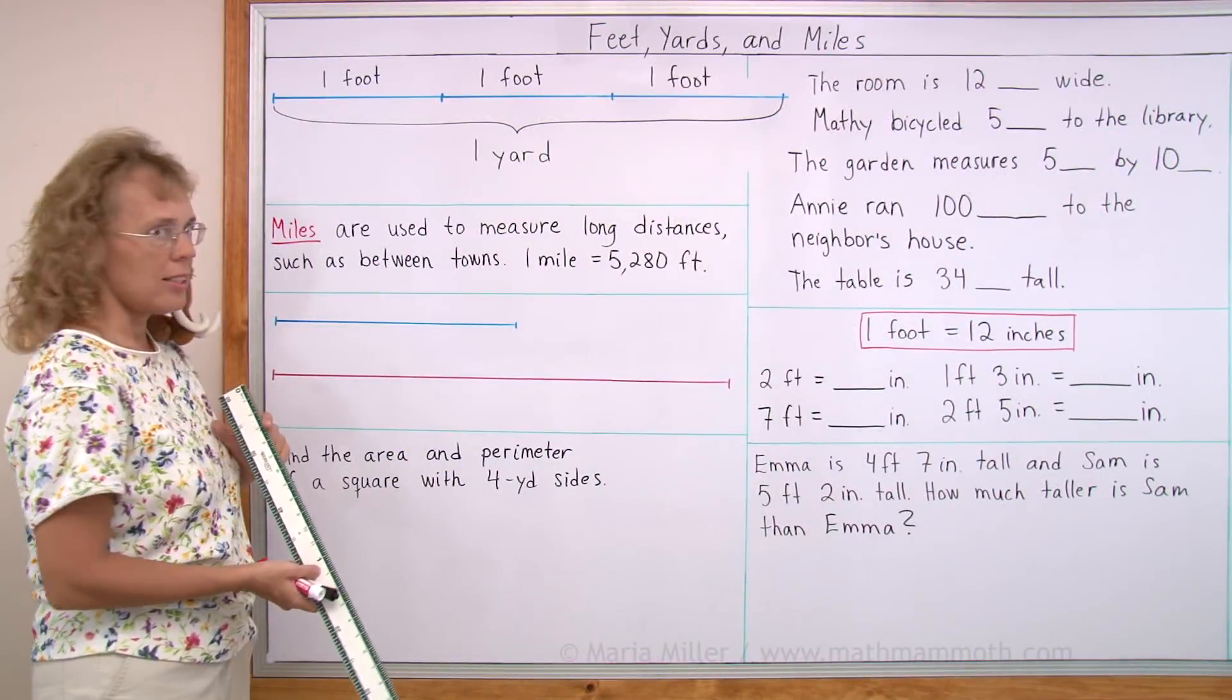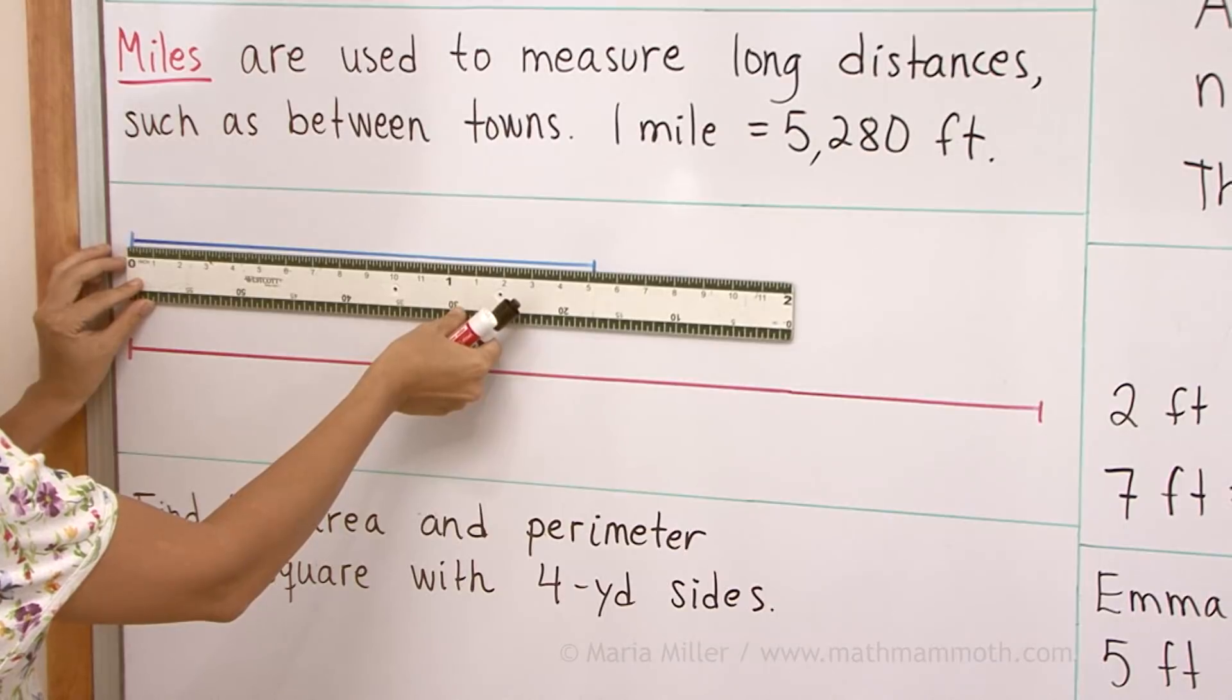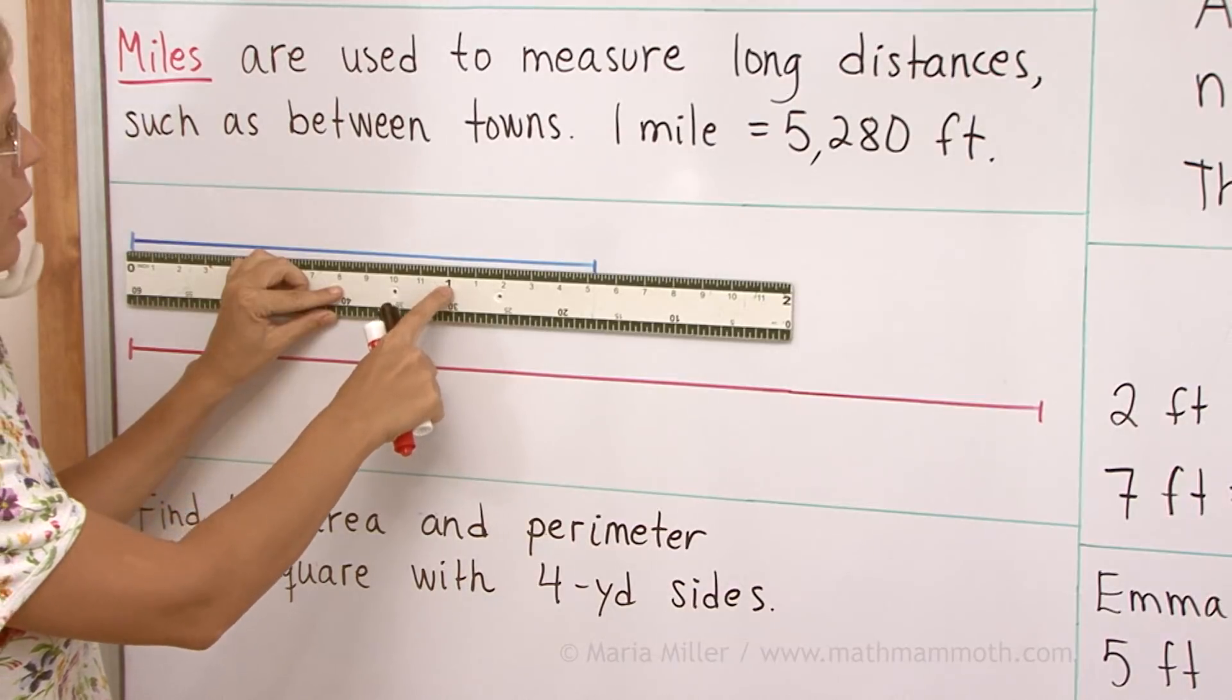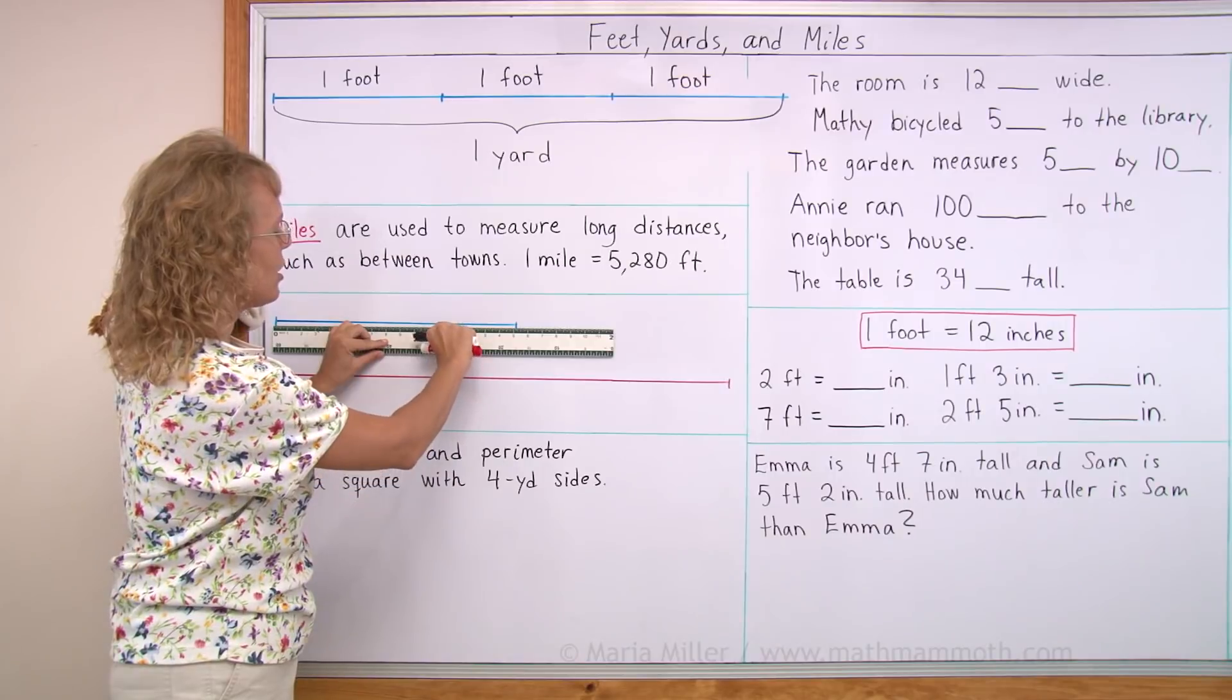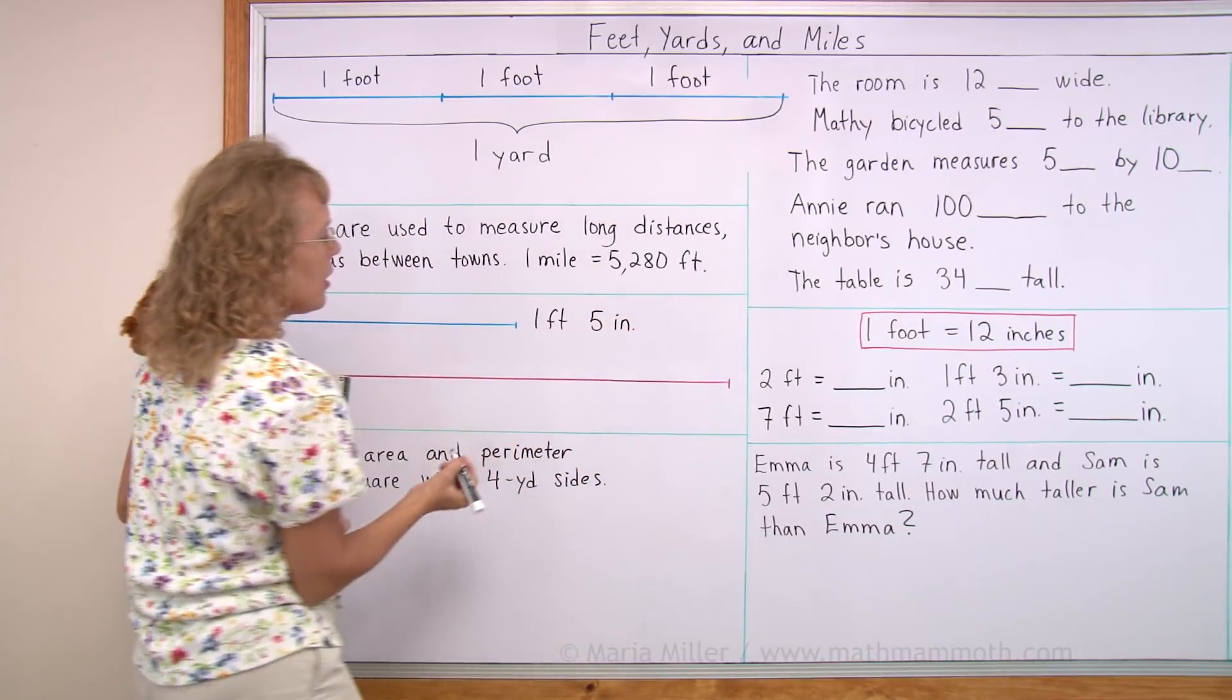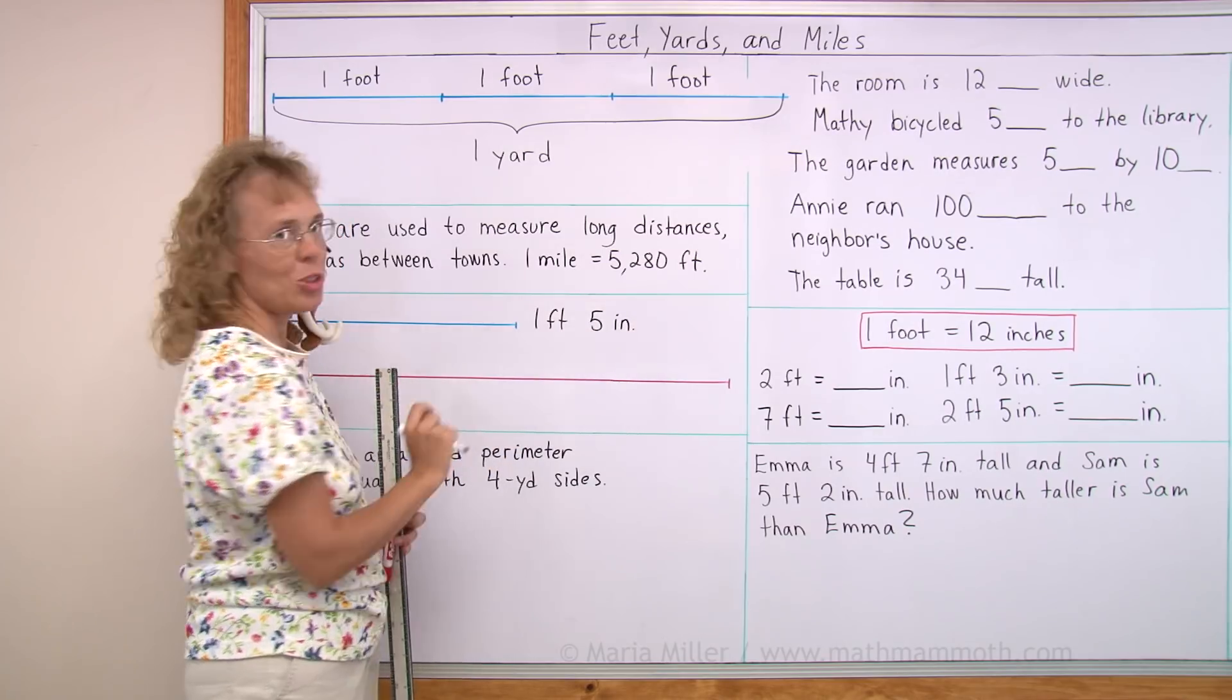Here I have two lines that I'm going to measure. As you can see, this one is more than one foot long because one foot is here. So after one foot, I have five inches. So it is exactly one foot five inches. This is how I can abbreviate foot as FT and then inch as IN, as you know.